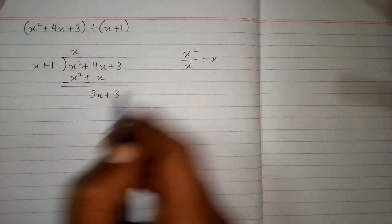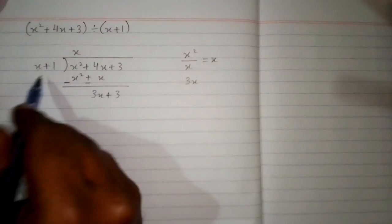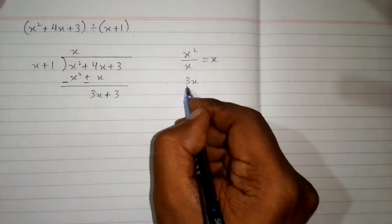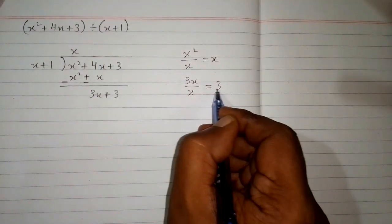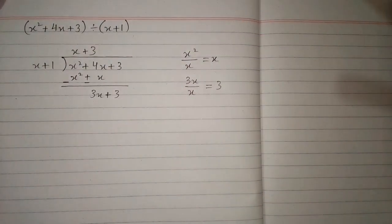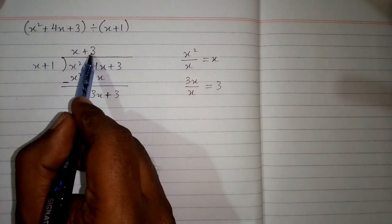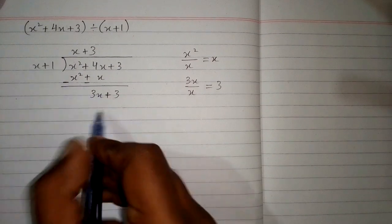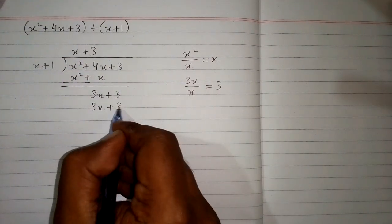We take the first term of this polynomial, which is 3x, and the first term of the divisor, which is x. Now 3x divided by x is 3. So we write plus 3 in the quotient and then multiply 3 by x plus 1. So 3 times x is 3x and 3 times 1 is 3.